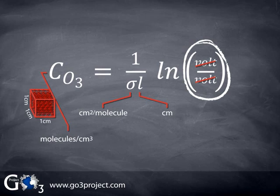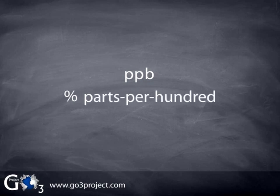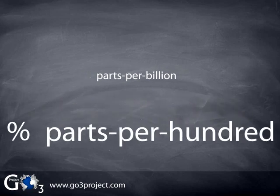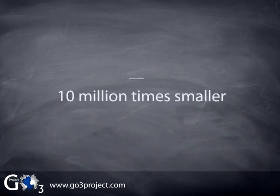As we have seen, ozone monitors fundamentally measure ozone concentrations using units like molecules per centimeter cubed. What is measured is the number of molecules in a cubic centimeter of air. Atmospheric scientists prefer to express ozone levels in fractional units such as parts per billion or PPB. We are all familiar with the fractional unit of percent. Like percent, the unit parts per billion is a fraction. Percent is parts per hundred. Parts per billion or PPB are ten million times smaller than percent.